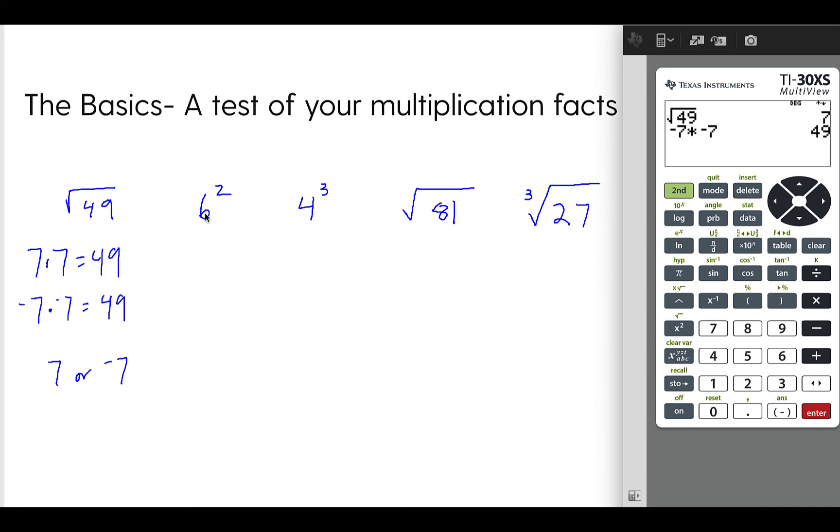Okay, this is 6 squared. So what this is, is what number, what is the answer if you take 6 times 6, or 6 times itself? So 6 times 6 is 36. Keep in mind here, what if we had negative 6 squared? And we actually mean by negative 6, we mean the whole negative 6, like this.